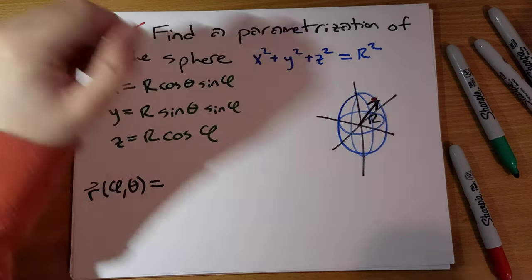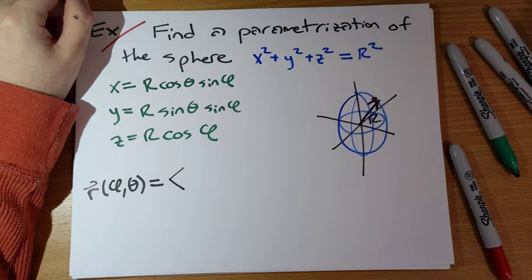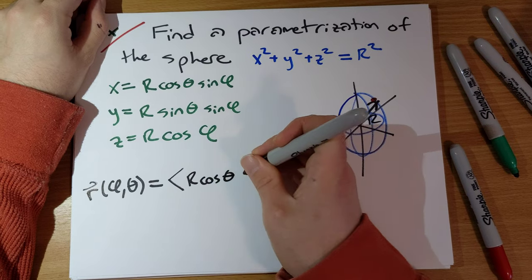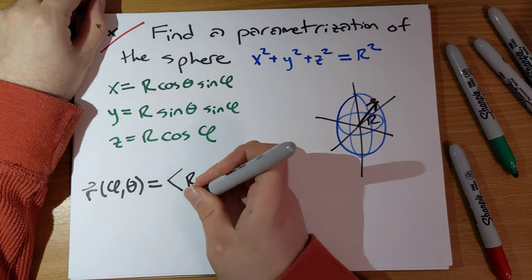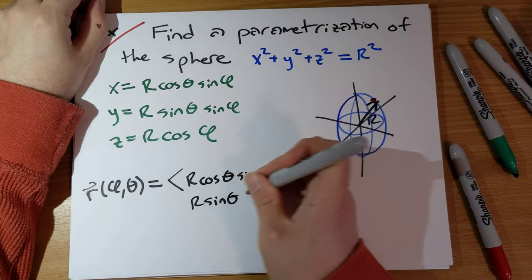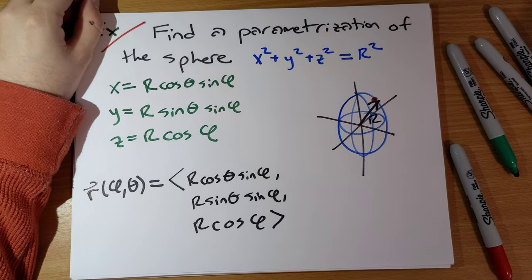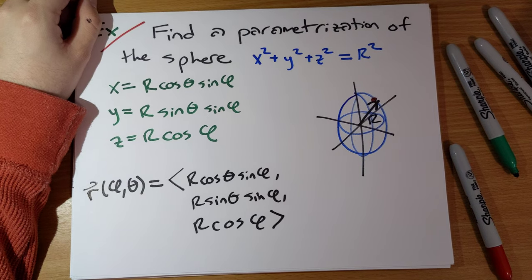So our parameterization here is going to be R times cosine theta sine phi, R times sine theta sine phi, R cosine phi. And for this to be a complete parameterization, we need to write down what are the bounds here.